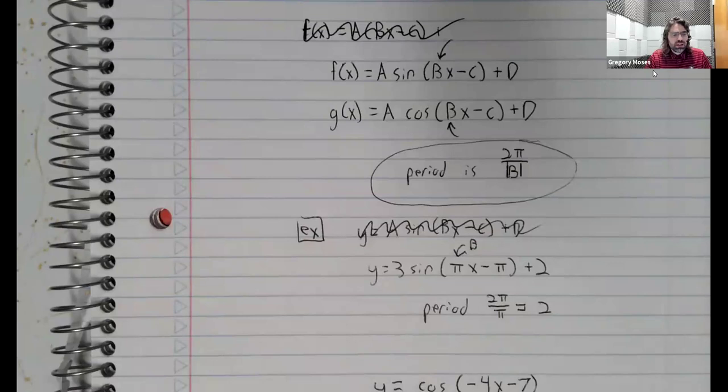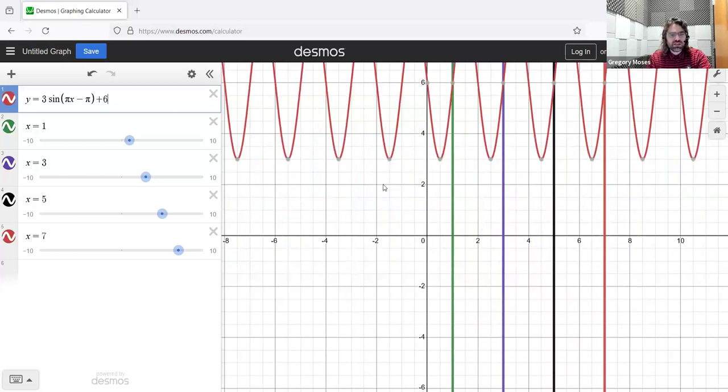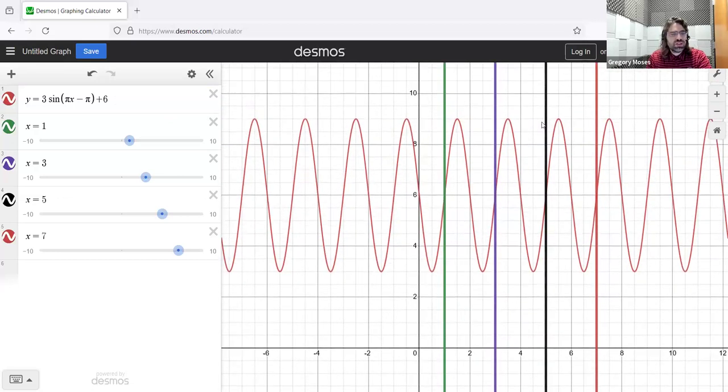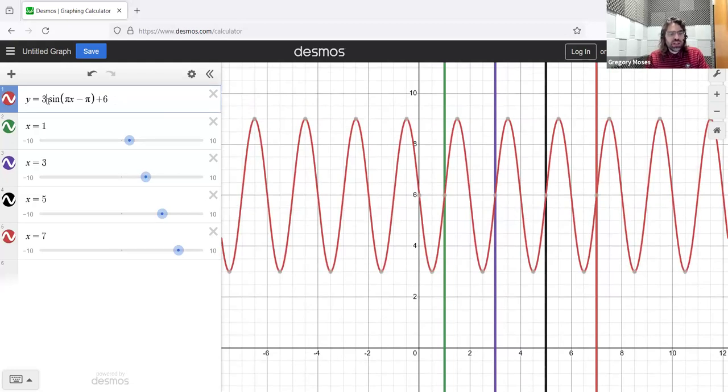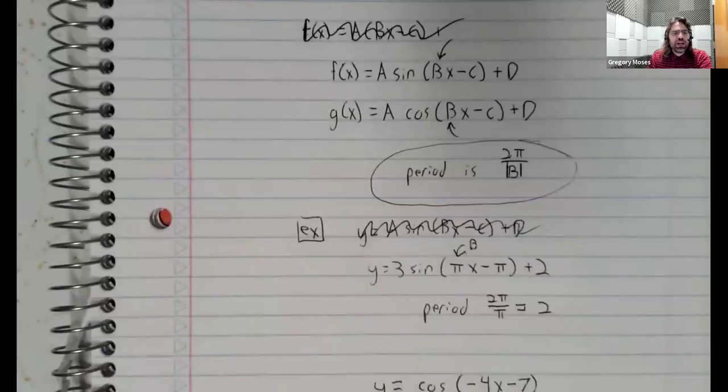If we go back to this, and instead of a plus 2, we have a plus 6. Now this is still a period 2 function. If we turn this 3 into a 1, still a period 2 function. It's only the b that matters when you're asking about the period. And the period is 2 pi divided by the absolute value of b.